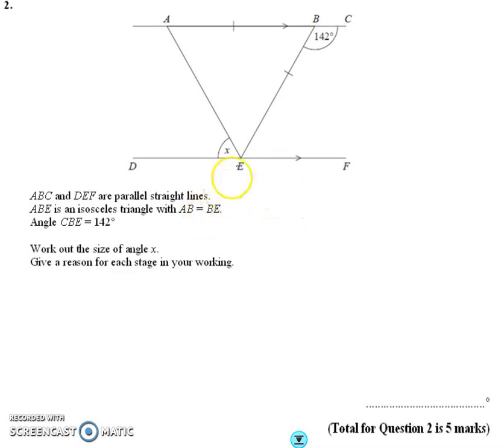So this is question two from this hard paper. We've got some parallel lines here. It tells us all the information. Important is that we are in an isosceles triangle. And another really important point here is that it tells us to give a reason with each stage of your working.